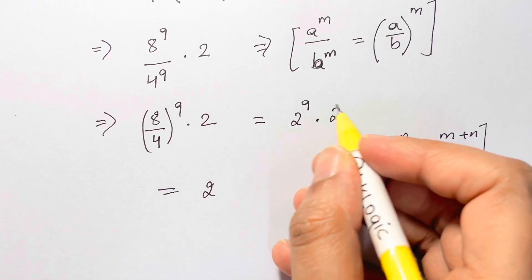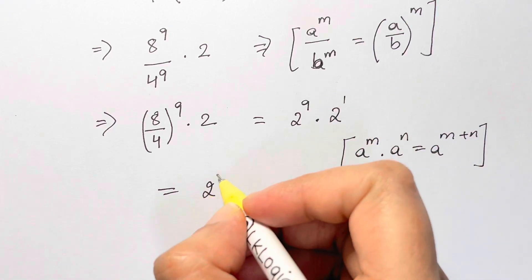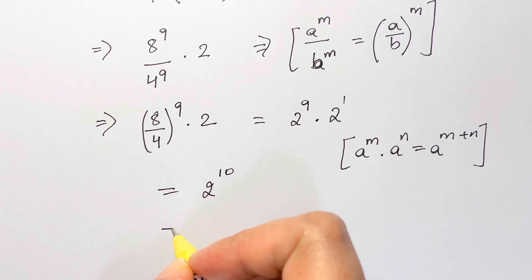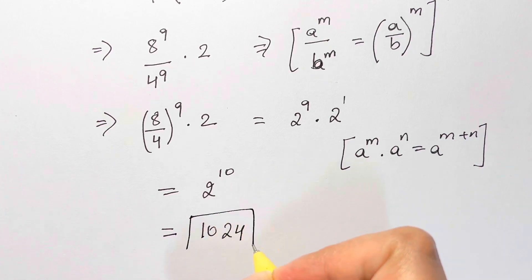So we add the powers, 9 plus 1 is 10. So 2 to the power of 10 is 1024. And that's your answer.